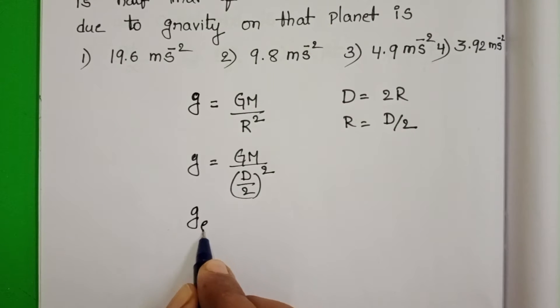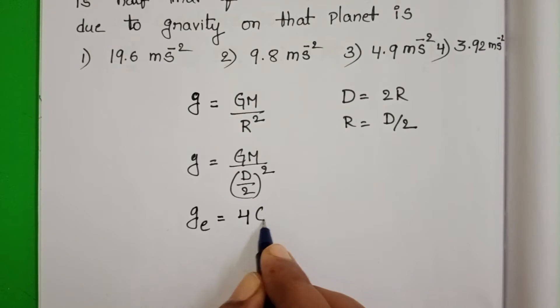Then acceleration due to gravity on the surface of the earth is equals to 4GM by D squared.